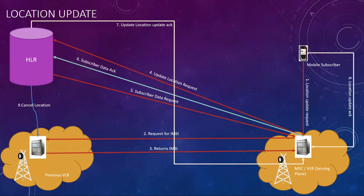This entire process happens within a fraction of a second. As soon as you switch on the mobile for the first time, you don't need to wait — it happens instantly and shows you the network. As you move, you don't even notice the location update happening because it's seamless connectivity provided by the telco operators to ensure uninterrupted coverage. Everything happens over the air interface within a fraction of seconds. Hope the concept of location update is clear — please share your comments below if you have any doubts.